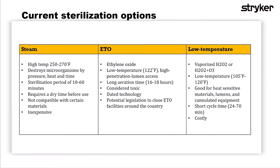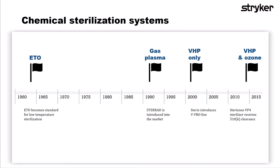Vaporized hydrogen peroxide sterilization has a relatively short cycle, anywhere from 24 to 70 minutes. However, it is quite costly. Looking at the timeline, ETO was used as early as the 1960s for sterilization. The first low-temperature sterilizer we saw come out in the 1990s was STERAD, using vaporized hydrogen peroxide with plasma. Then STERIS introduced their V-Pro line in 2000 using vaporized hydrogen peroxide only. Around 2012-2013, the Stryker SteroZone VP4 was introduced, utilizing vaporized hydrogen peroxide with ozone.